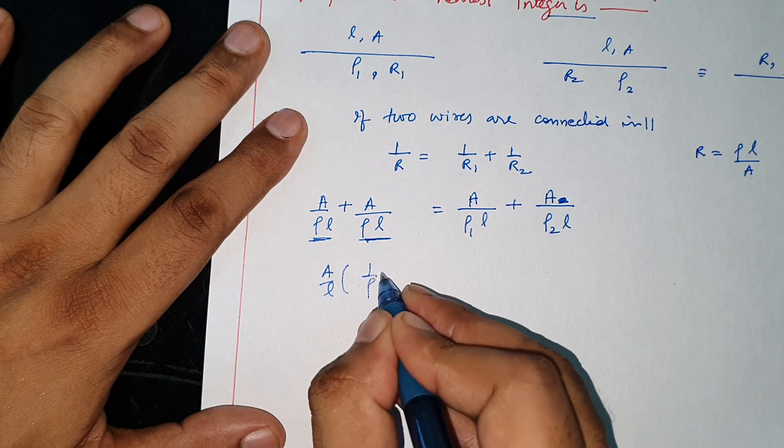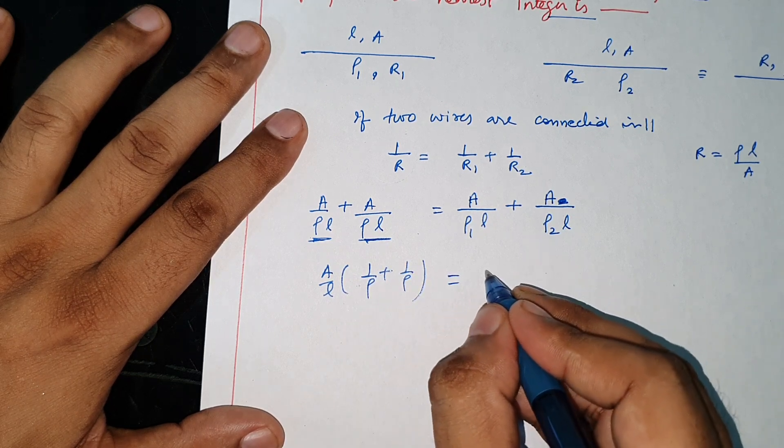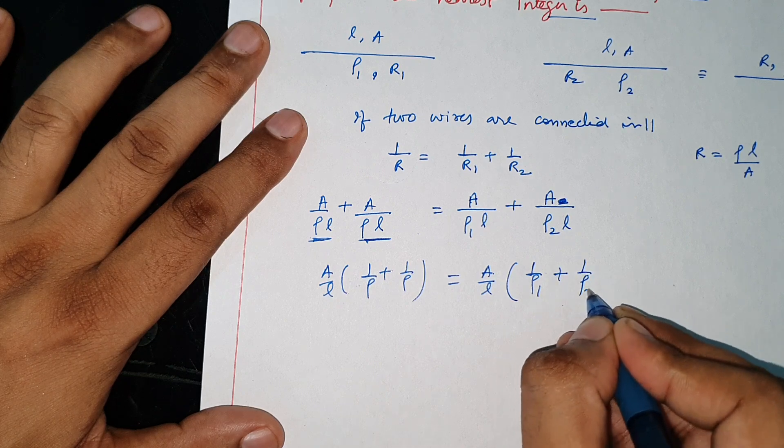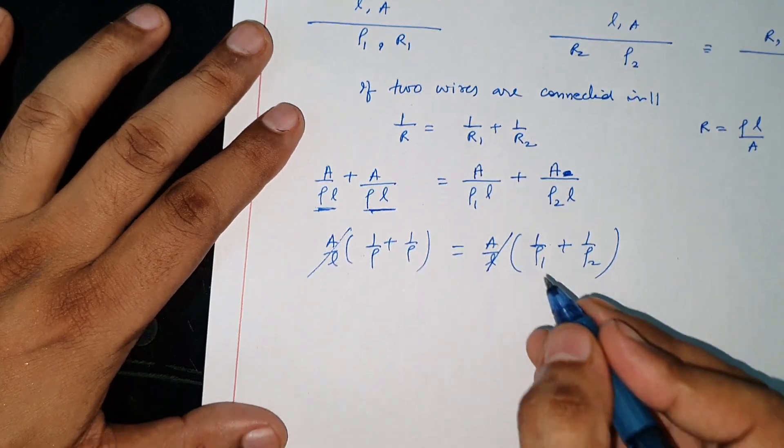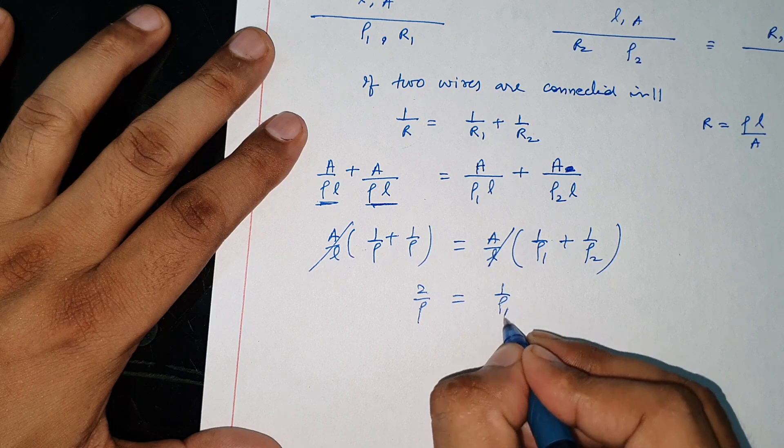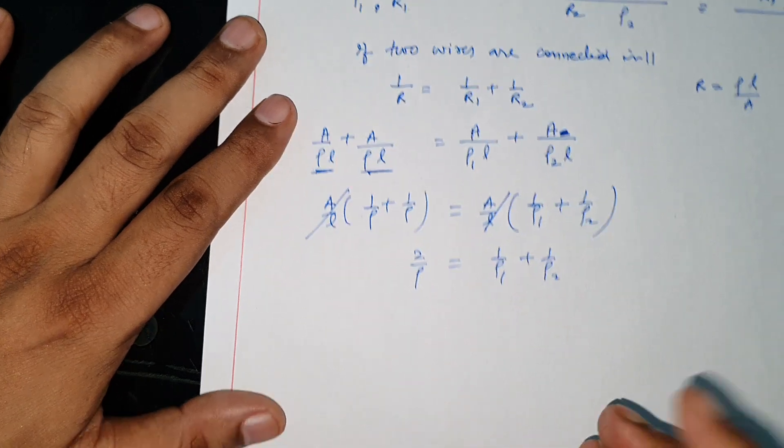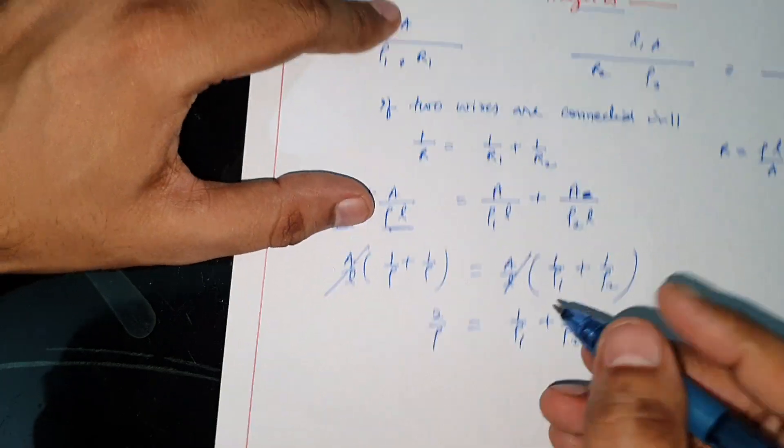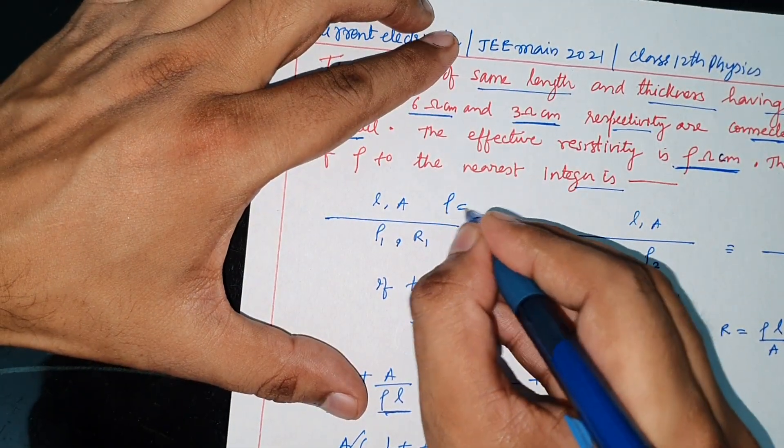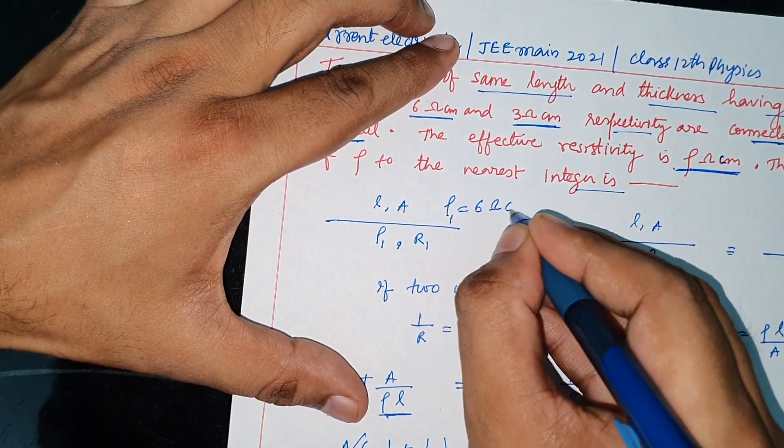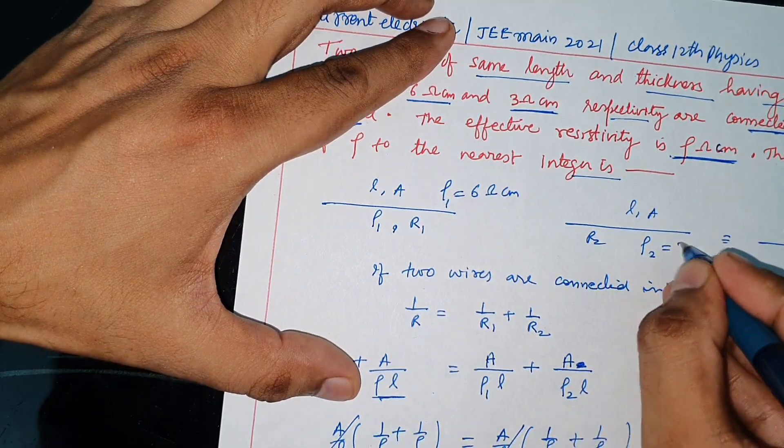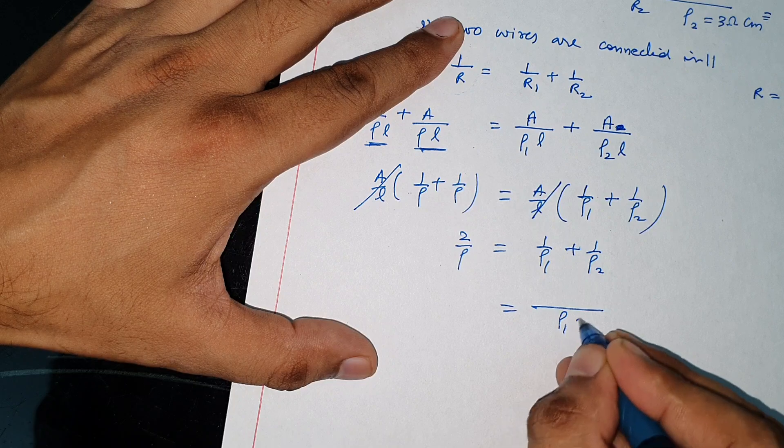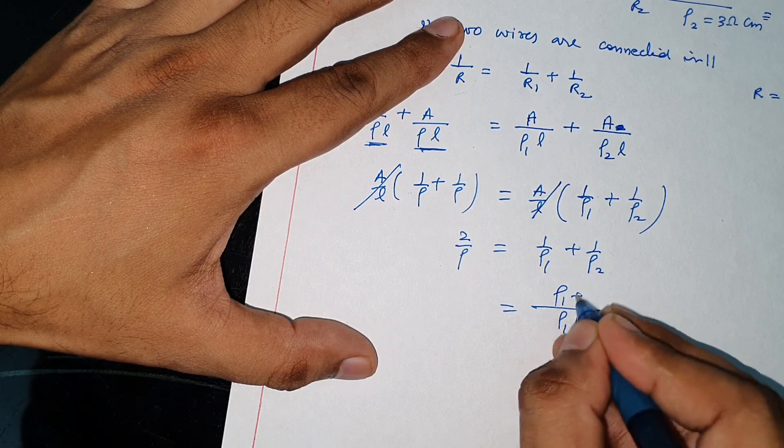A over L common. So rho equals 2 rho 1 rho 2 over rho 1 plus rho 2.